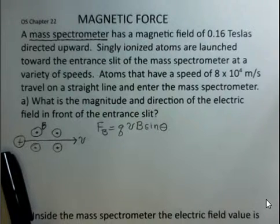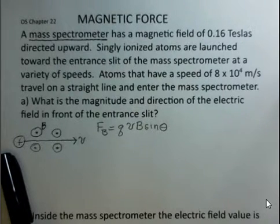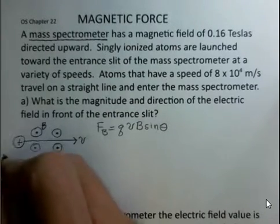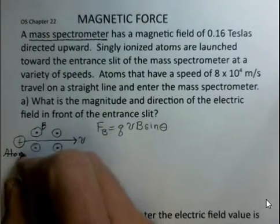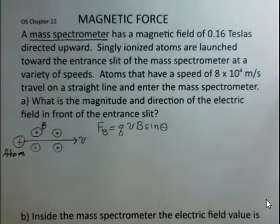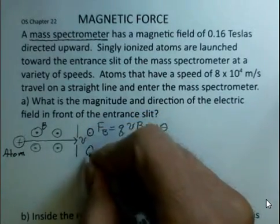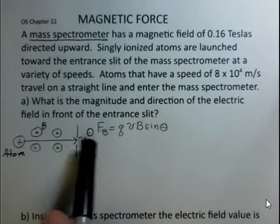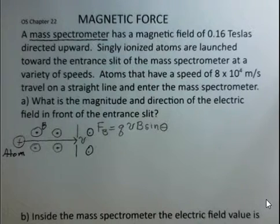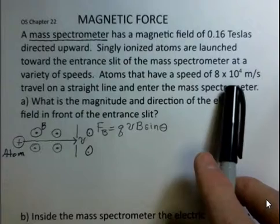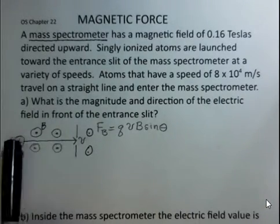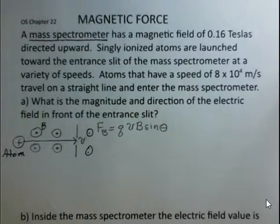We take one electron off of atoms, so we have singly ionized atoms carrying a positive charge. We launch that atom off to the right through this region where there's a magnetic field, 0.16 Teslas pointed upward. We want certain atoms to go through in a straight line through the entrance slit, only atoms that have a speed of 8 times 10 to the fourth meters per second.